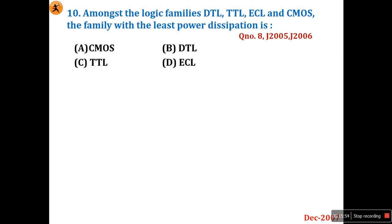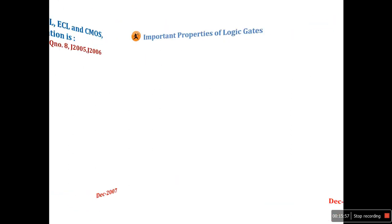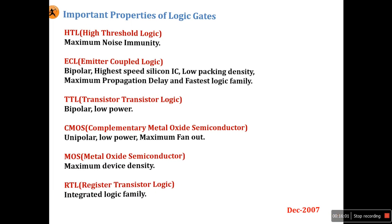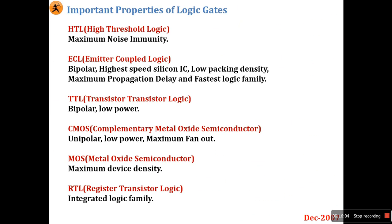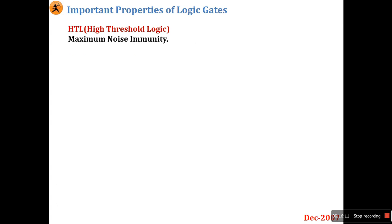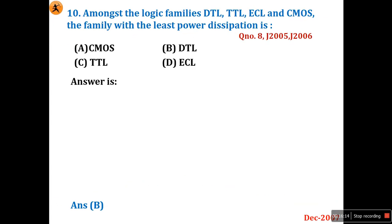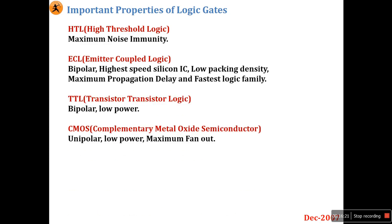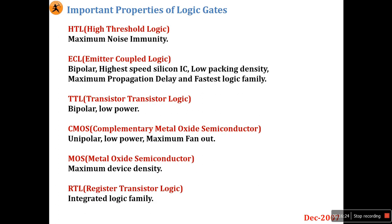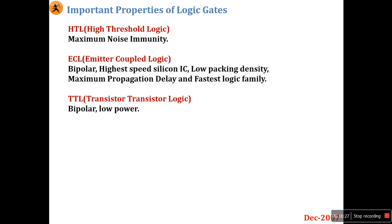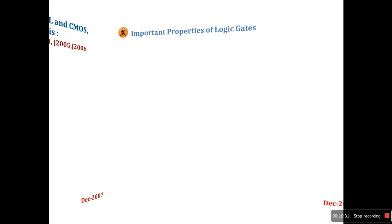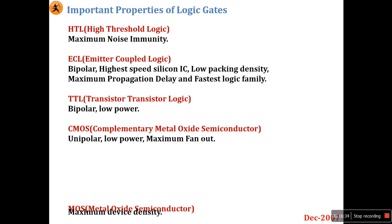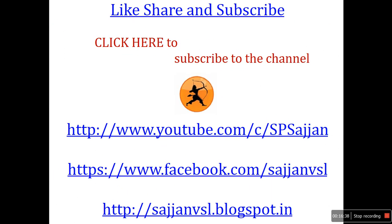Remember the comparison table for all characteristics of logic families. For least power dissipation, the answer is CMOS. Please remember this table — it covers all characteristic comparisons. Thank you for watching; please inform your friends, share, and subscribe to the channel.